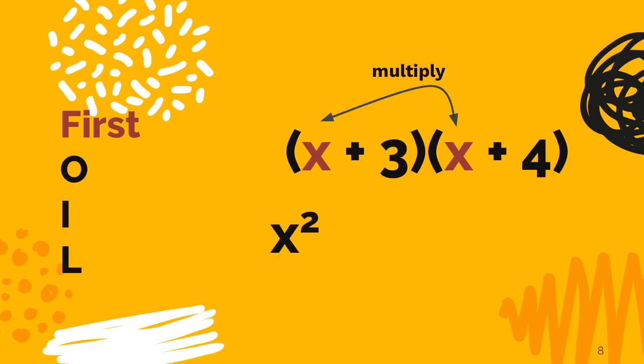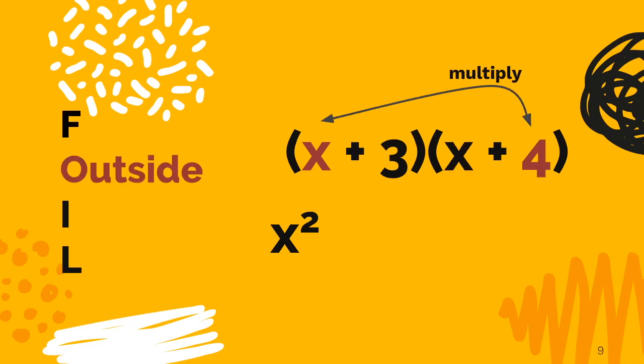Let's move on to the O. O stands for the outside terms, in this case x and 4. And we have to remember to multiply them. When you multiply them, you get 4x.